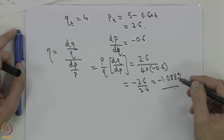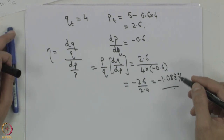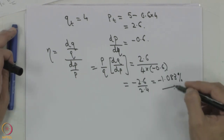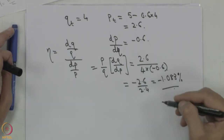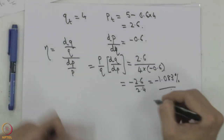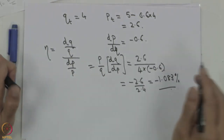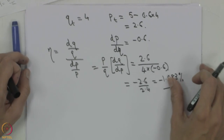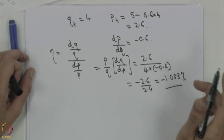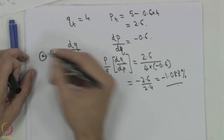The negative sign is obvious because if the price increases, the quantity would decrease. If you look at the absolute value, it will be 1.08. So this is the first part of the question — the price elasticity of demand, part A.